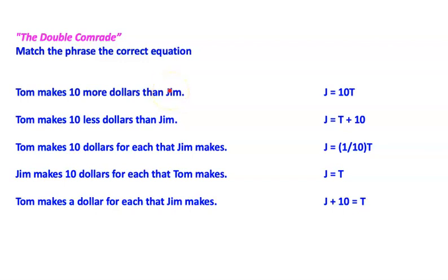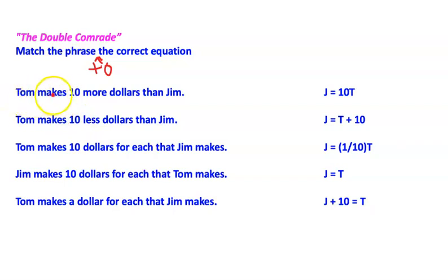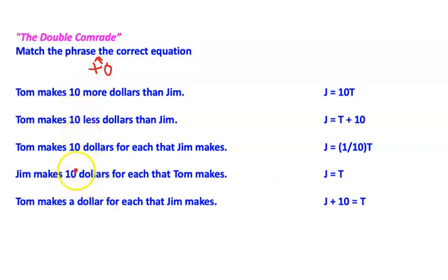Hey, what's up students — let's do the double comrade match the phrase to the correct equation. It says right here: Tom makes ten more dollars than Jim. The names might change throughout, but the story will always involve some relationship — more, less, or some type of ratio between the two amounts.